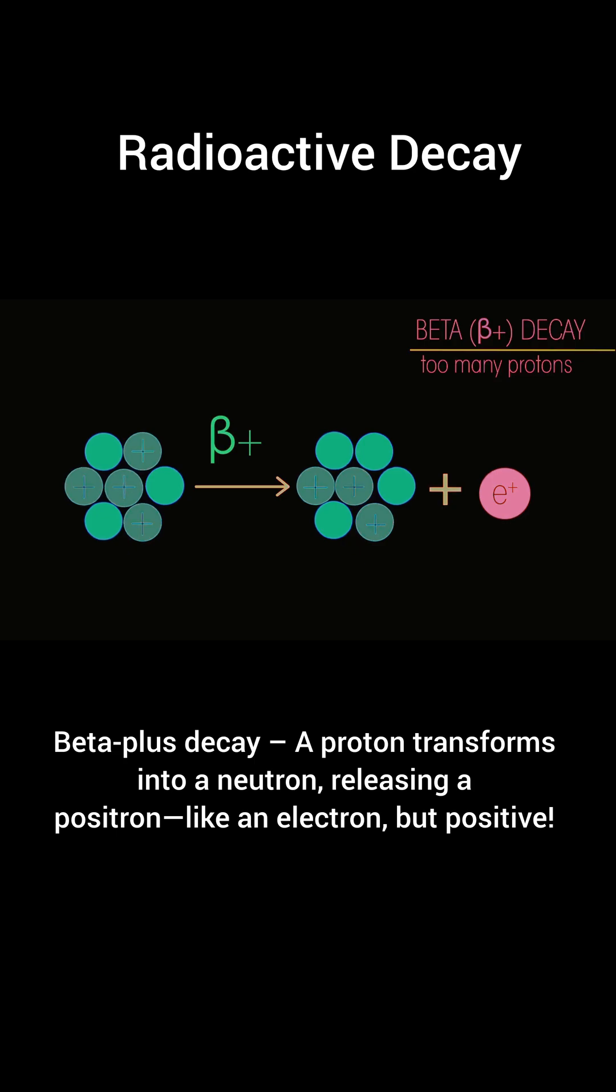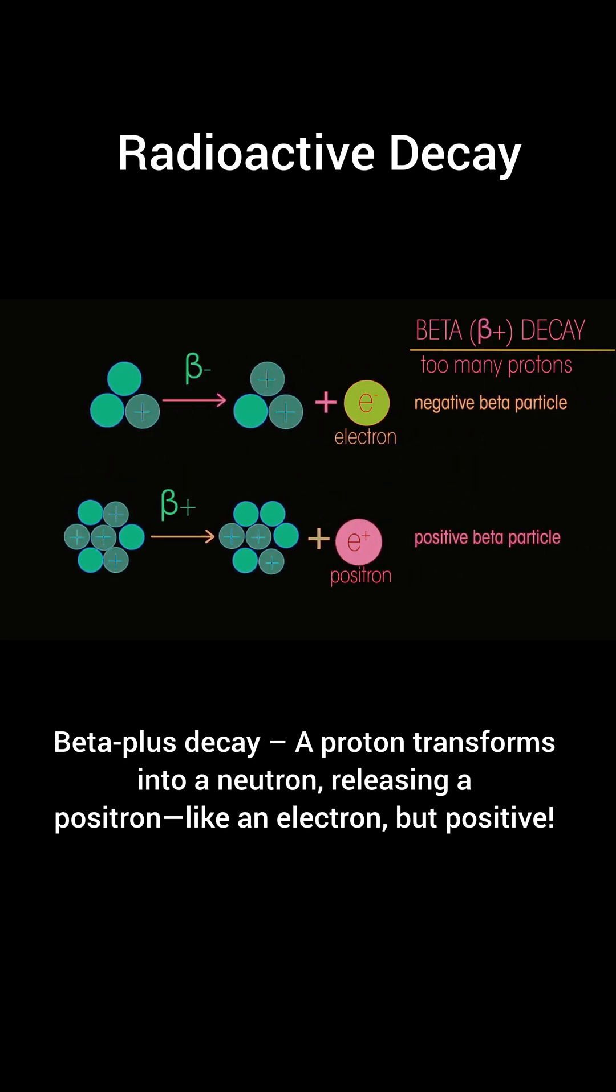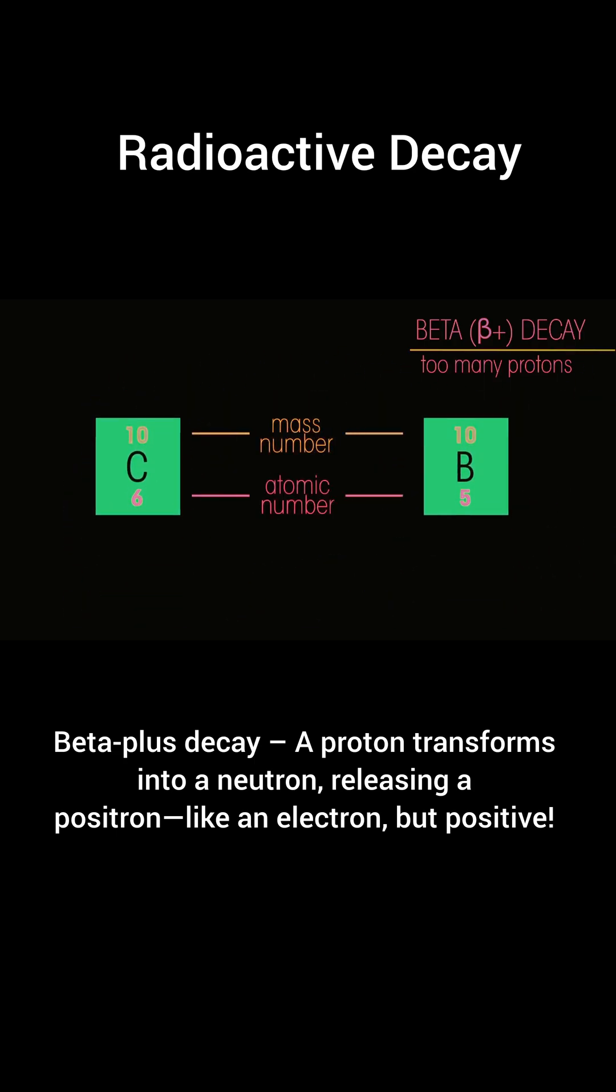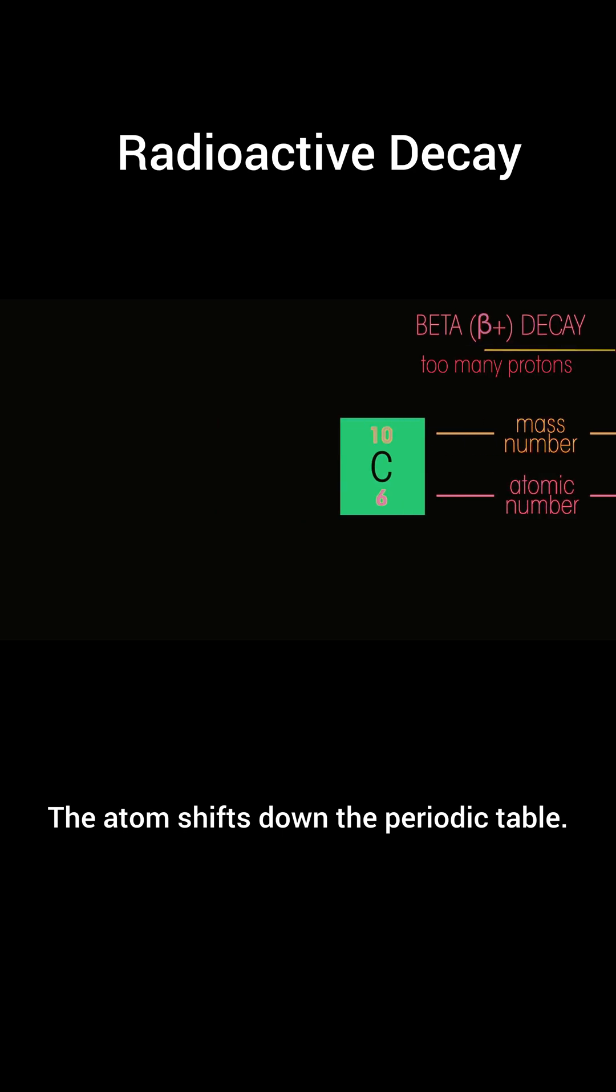Beta plus decay—a proton transforms into a neutron, releasing a positron, like an electron but positive. The atom shifts down the periodic table.